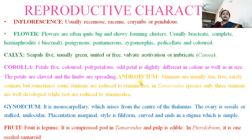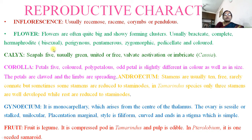Reproductive characters — Inflorescence is usually a raceme or racemose, corymb or pendulous. Flowers are often quite large and showy, forming clusters, usually bracteate, complete (meaning all four whorls are present: calyx, corolla, androecium, gynoecium).